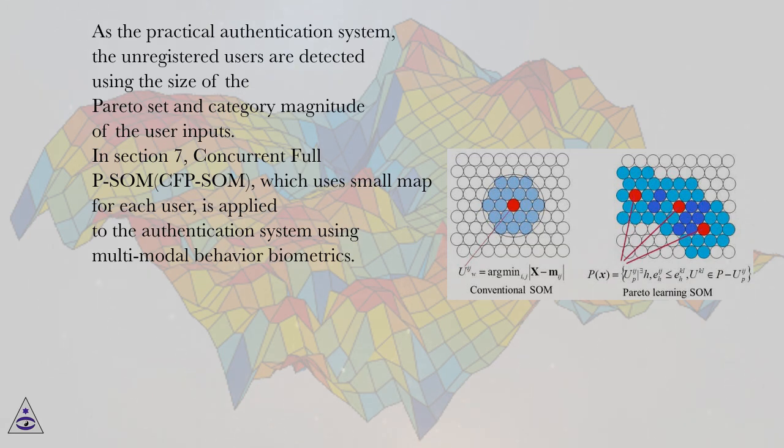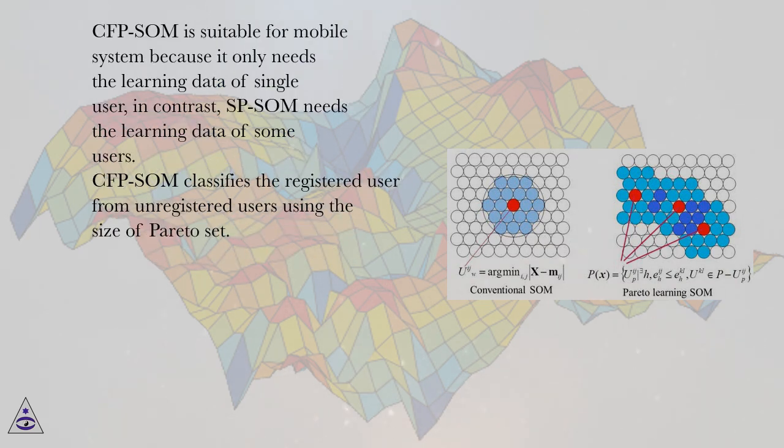In section 7, Concurrent Full P-SOM (CFP-SOM), which uses small map for each user, is applied to the authentication system using multimodal behavior biometrics. CFP-SOM is suitable for mobile system because it only needs the learning data of single user.